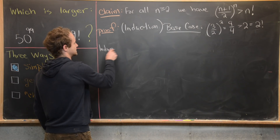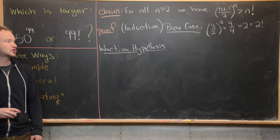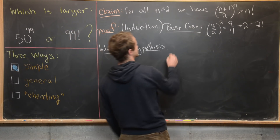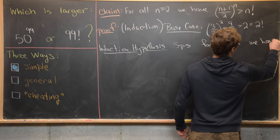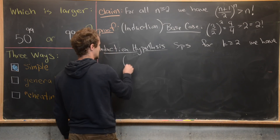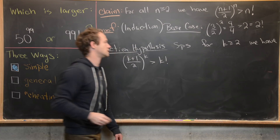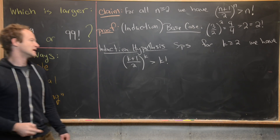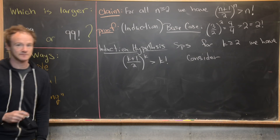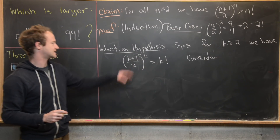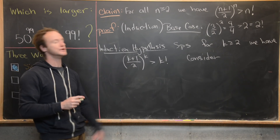Next we make our induction hypothesis: we suppose the statement is true for some k greater than or equal to 2. So we assume (k+1)/2 to the k is bigger than k factorial. That is our induction hypothesis. Then what we want to do is consider the k plus first case — we'll start at the left-hand side of the inequality and decompose it until we can use the induction hypothesis.